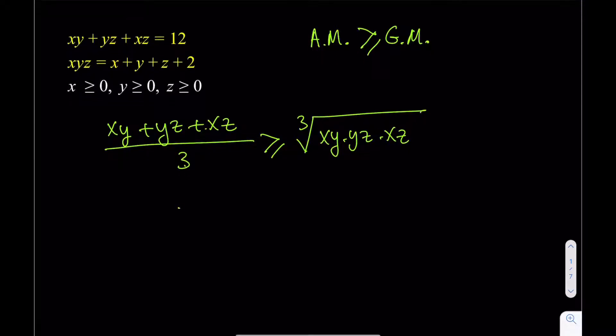So, I can safely say that the cube root of, and from here, I'm going to be getting X squared, Y squared, and Z squared, right? That should be less than or equal to 4, which is 12 divided by 3. It's basically the first inequality that I'm going to be getting.